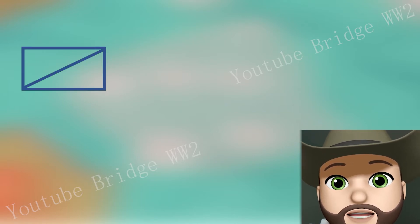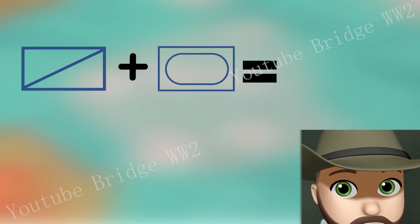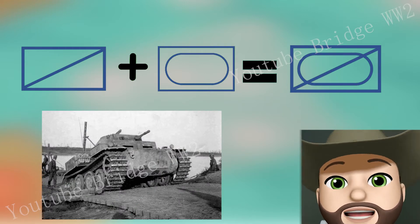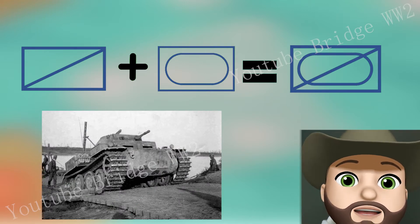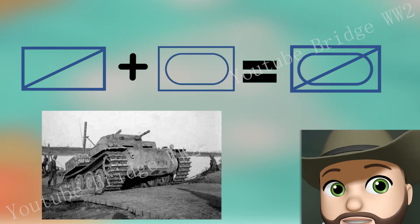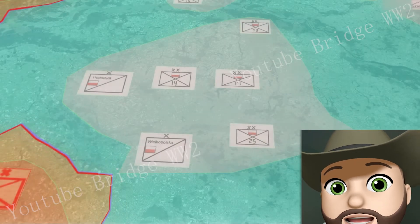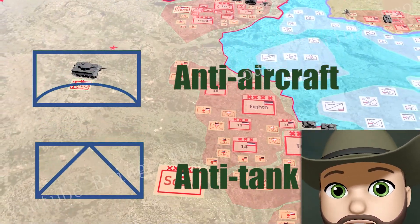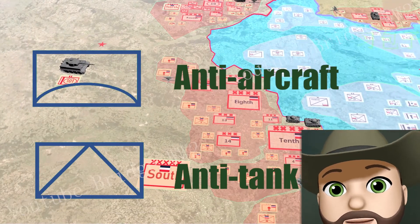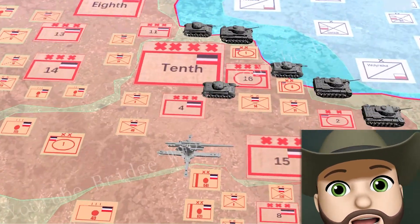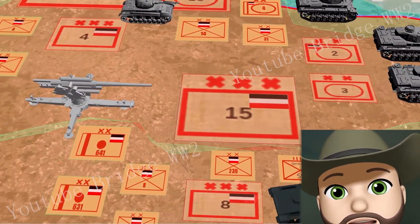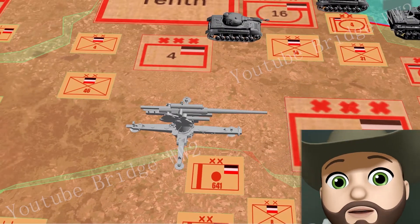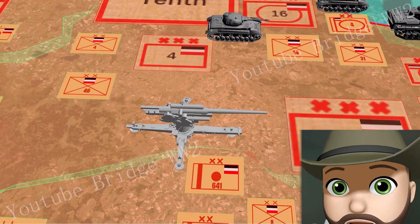If you combine the symbol of a tank with the symbol of a scout, it represents a mechanized scout. Mechanized scouts consist of light tanks with high mobility as well as armored vehicles. The last category is the anti-aircraft and anti-tank units, which are represented by a sleek and sharp bulge. The German 88mm anti-aircraft gun, for example, can be used for both anti-aircraft and anti-tank purposes.